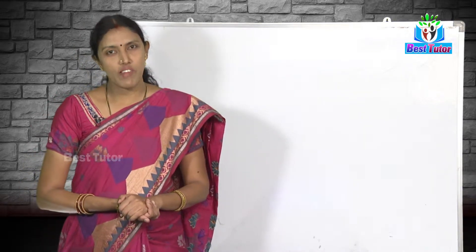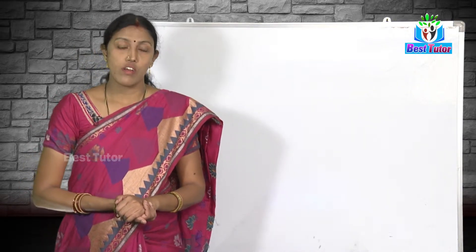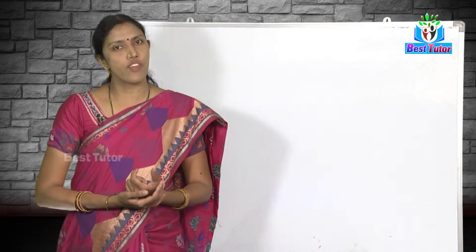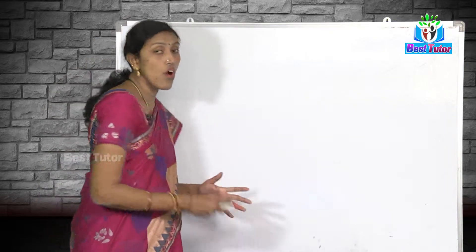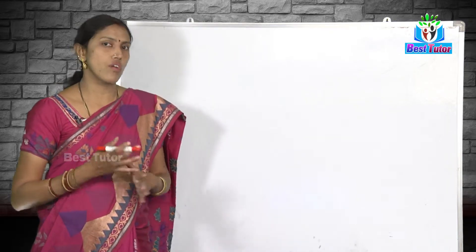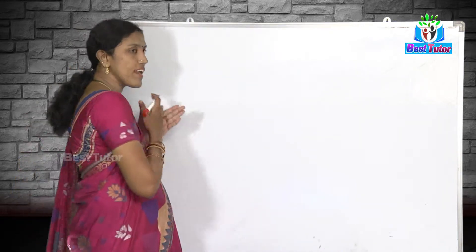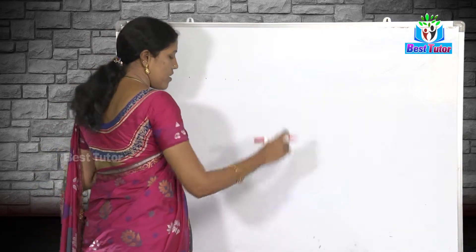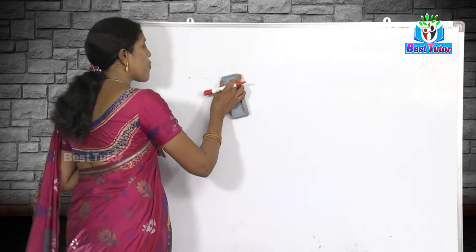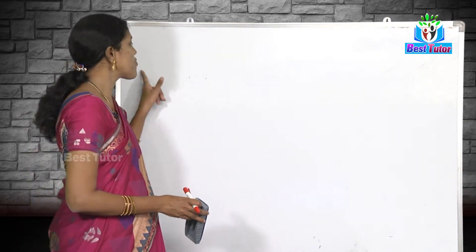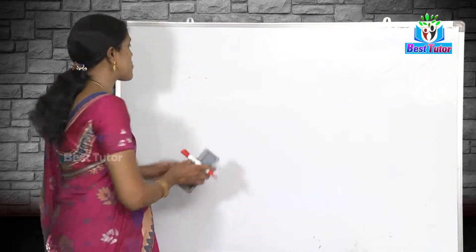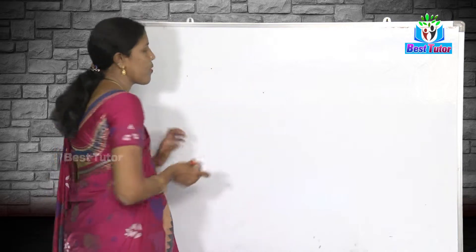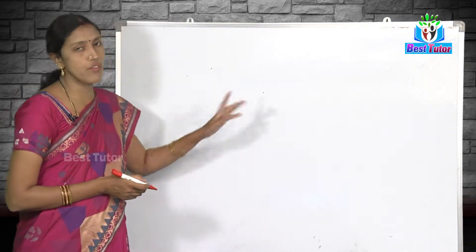Hello friends, welcome to Best Tutor. This is Ramavishwanan. In today's video we are going to learn one very simple theorem of circles. If we have three non-collinear points — points are said to be collinear if they lie on the same straight line. Two points are always collinear. If we have three non-collinear points, that means they are not on the same straight line.